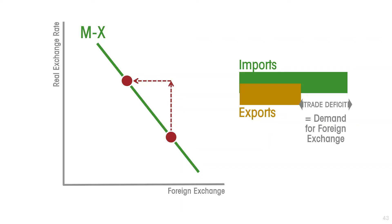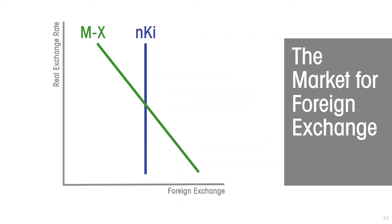These two curves reflect all of the demand and supply for foreign exchange in our simplified representation of the foreign exchange market. If the real exchange rate is such that there is more demand for foreign exchange to pay for the trade deficit than is coming in from net capital inflows, then the banks and cambios are going to notice that their float of foreign exchange is falling. Soon they won't have any foreign exchange to sell, so they are going to increase the exchange rate to discourage so many people from buying it. The exchange rate is going to rise.